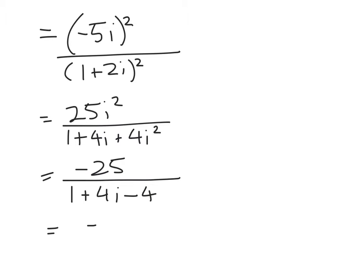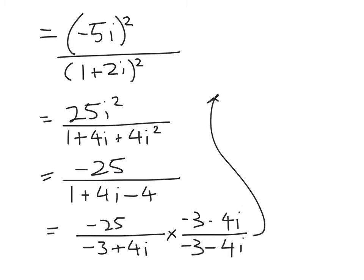We've got negative 25 over 1 plus 4i minus 4, so that's negative 25 over negative 3 plus 4i. Now I want to multiply by 1.